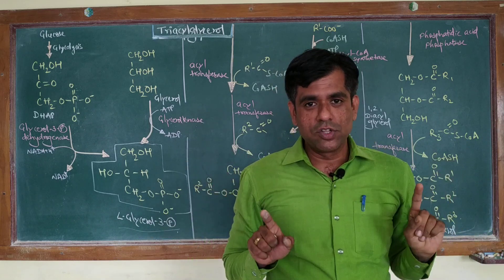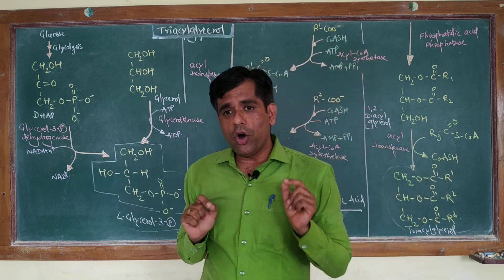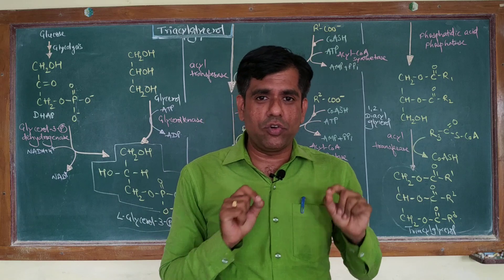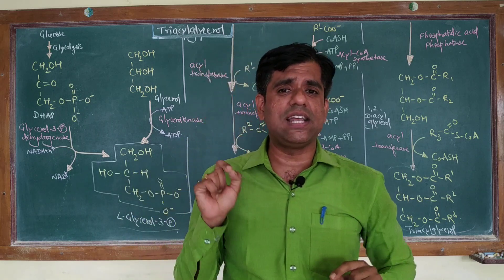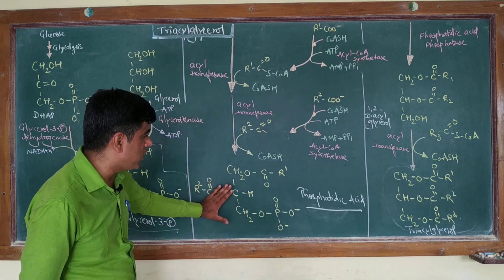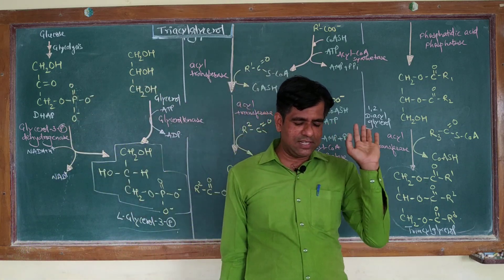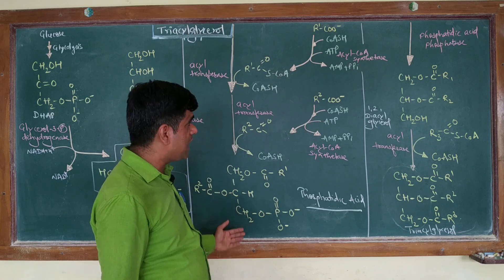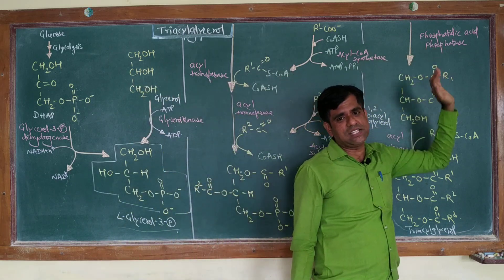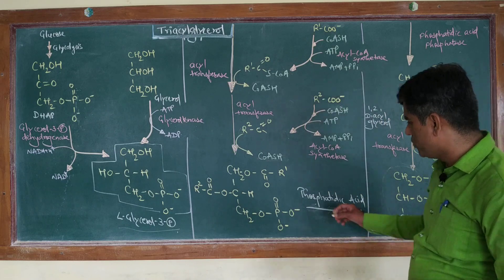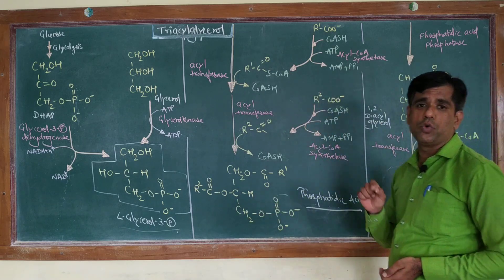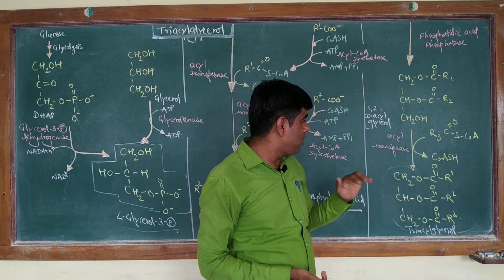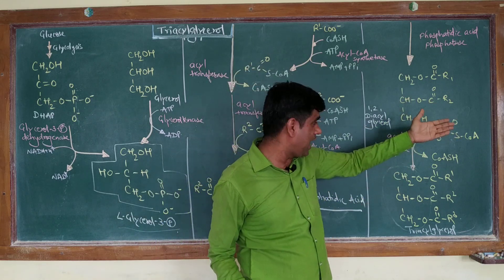The pathway diverges from here. Whether you are synthesizing a glycerophospholipid or a triacylglycerol, you arrive at phosphatidic acid. Now, assuming the cell is going to store fatty acids, the next step is catalyzed by phosphatidic acid phosphatase, which removes the phosphate group, resulting in the formation of 1,2-diacylglycerol. The third carbon is then esterified with a third fatty acyl-CoA in a similar way.